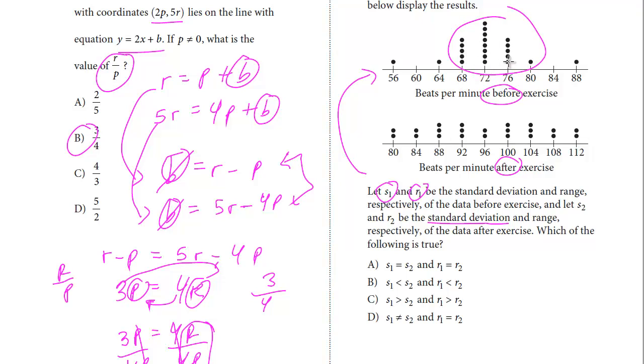So just by looking at this, you see how you've got really the bulk of the observations here, the beats per minute before the exercise, and there's just a couple outliers. But here you see how they're really much more evenly distributed. This one is going to have a greater standard deviation because the observations are farther from the mean.